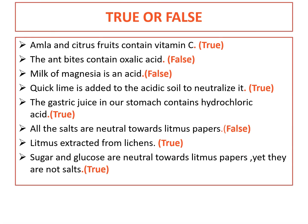Today's last topic: true or false. Amla and citrus fruits contain vitamin C — yes, that is true. The ant bite contains oxalic acid — that is false, because ant bite contains formic acid.